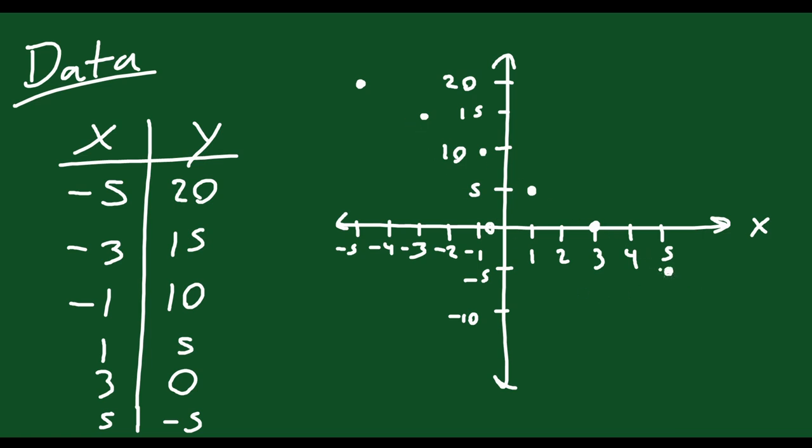And what you notice is that these points all make up a nice line. If you connect these points like this, they make a straight line. And in this case, this is what we would call a linear function. And we're going to talk about that quite a bit in the upcoming lessons.